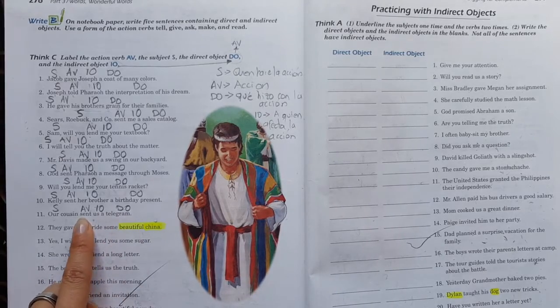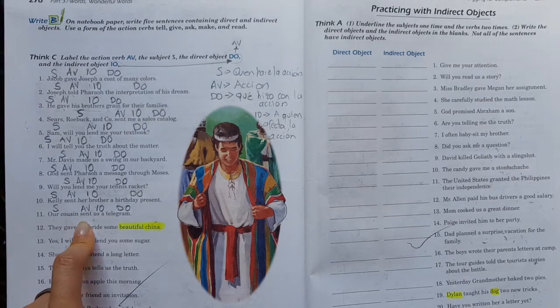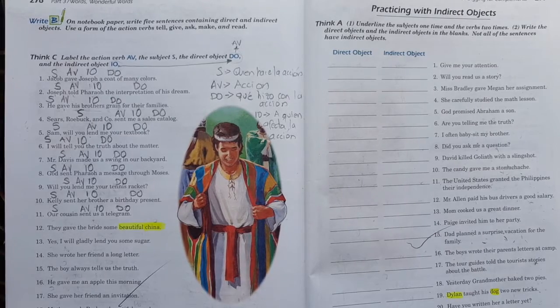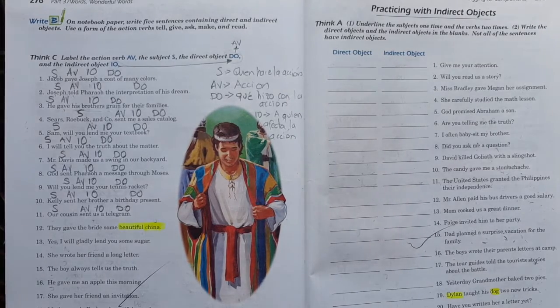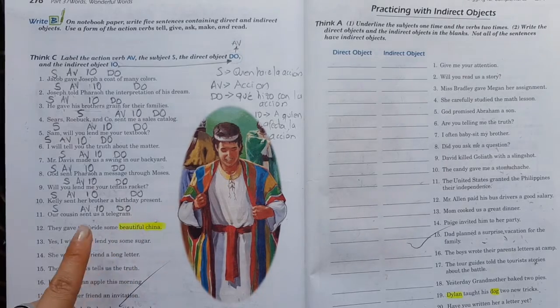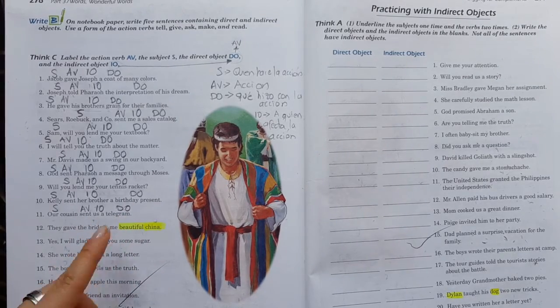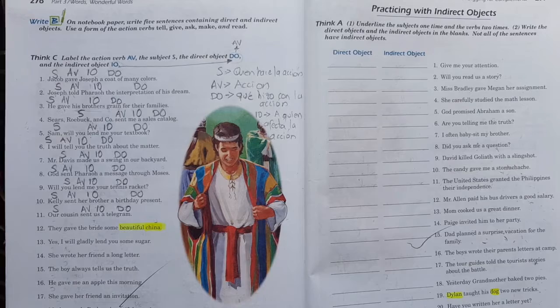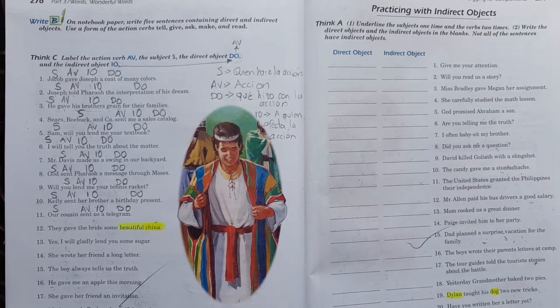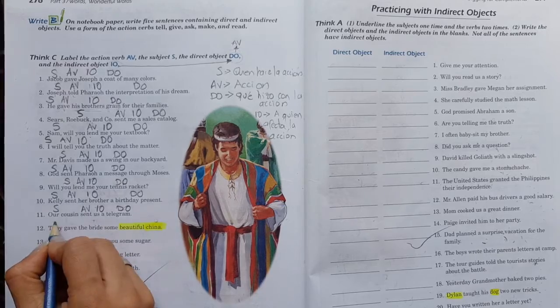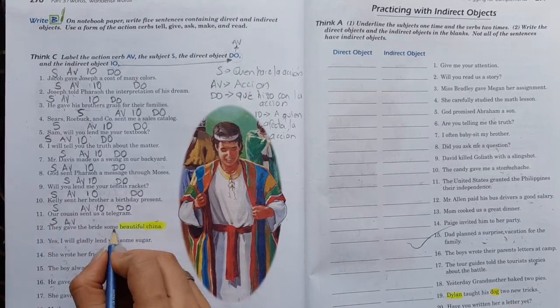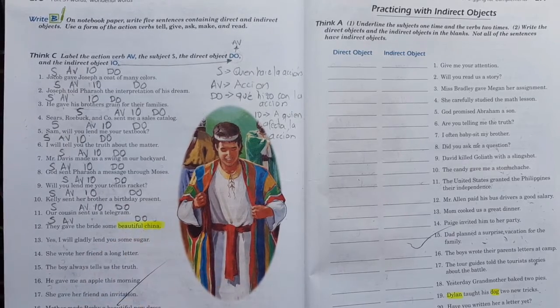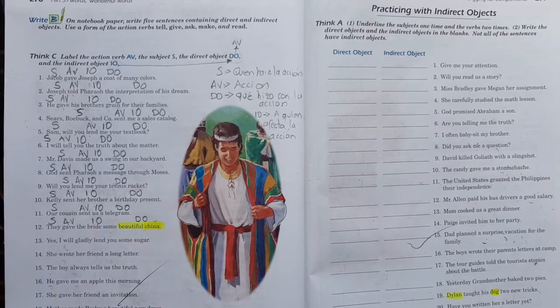Kelly le envió a su hermano un regalo de cumpleaños. Entonces, Kelly. ¿Qué hizo Kelly? Envió. ¿Qué envió? Un regalo de cumpleaños. ¿Y a quién se lo envió? A su hermano. Esas son las preguntas que te tienes que realizar. Número once. Nuestro primo nos envió un telegrama. Entonces, nuestro primo, ¿qué hizo? Envió. ¿Qué envió? Un telegrama. Objeto directo. ¿Y a quién se lo envió? Pues a nosotros.